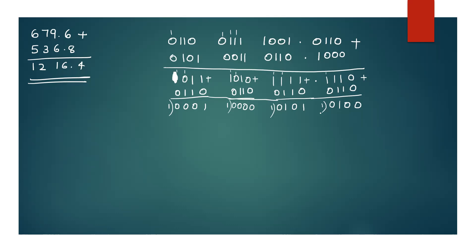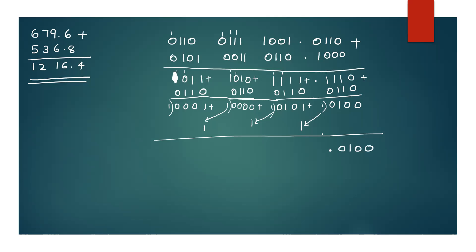Now what do you do with this? The result bits are: 1, 1, 1, 1, 1, 1, 1, 1. The last bit is 0. So the pattern is 0, 1, 0, 0. 1 plus 1 equals 0.